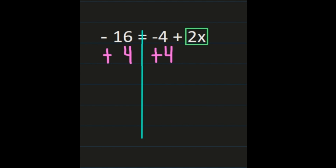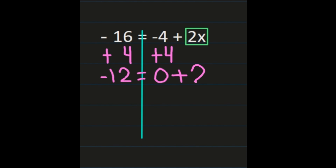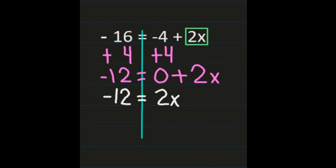On the left-hand side, we have negative 16 plus 4. Adding integers with different signs, you subtract: 16 minus 4 is 12, and you keep the sign of the number with the larger absolute value — that's the negative 16 — so we have negative 12 on the left. On the right, the negative 4 plus 4 is 0, plus the 2x we haven't done anything to. Simplifying, we get negative 12 equals 2x. Now I've isolated the 2x and have a one-step equation, and we're ready to isolate x.